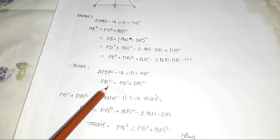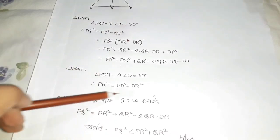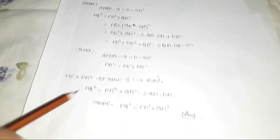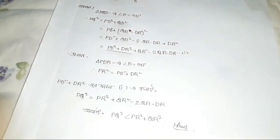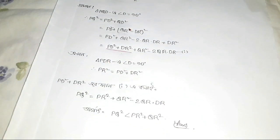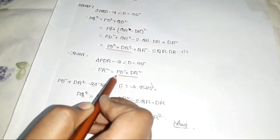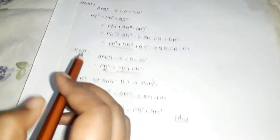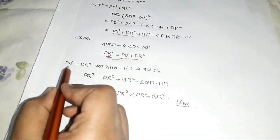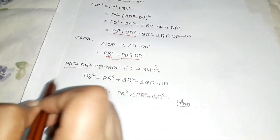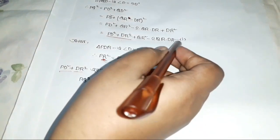PR squared — here we have PD squared plus DR squared. Here PR squared equals PR squared, like PE squared plus R squared. This takes us — one is bigger than that.